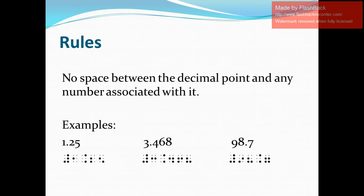Now let's go to the rules that we need to follow when we write the decimal point. Rule one is that there should be no space between the decimal point and any number associated with it. For example, 1.25: in Nemeth, we write the numeric indicator, the digit 1, then the decimal point, then the digits 2 and 5. There is no space before the decimal point and no space after the decimal point.